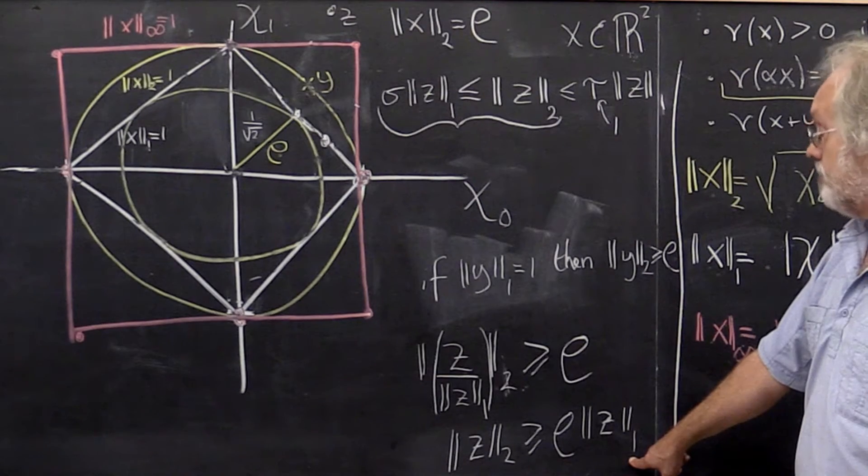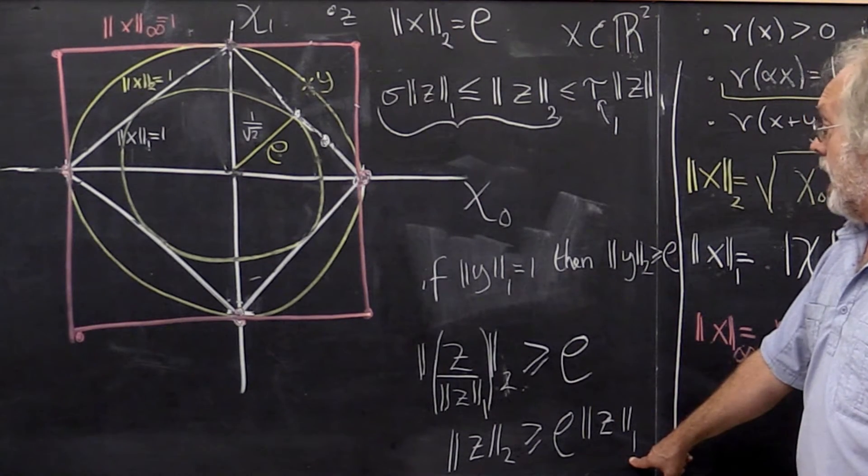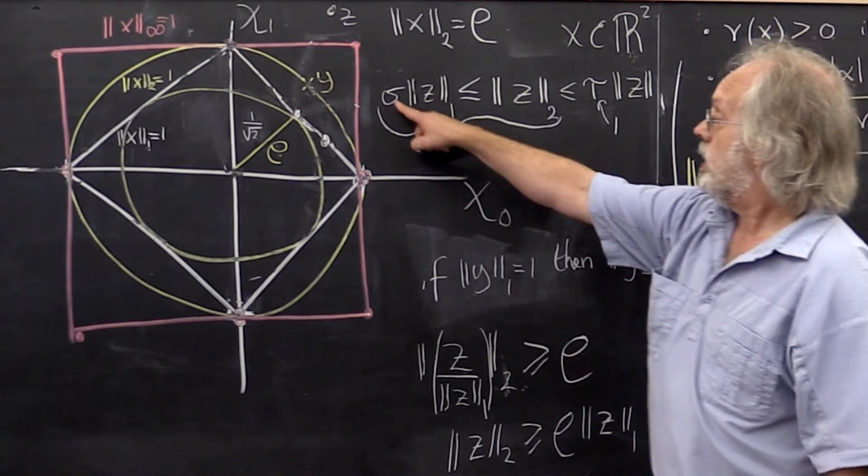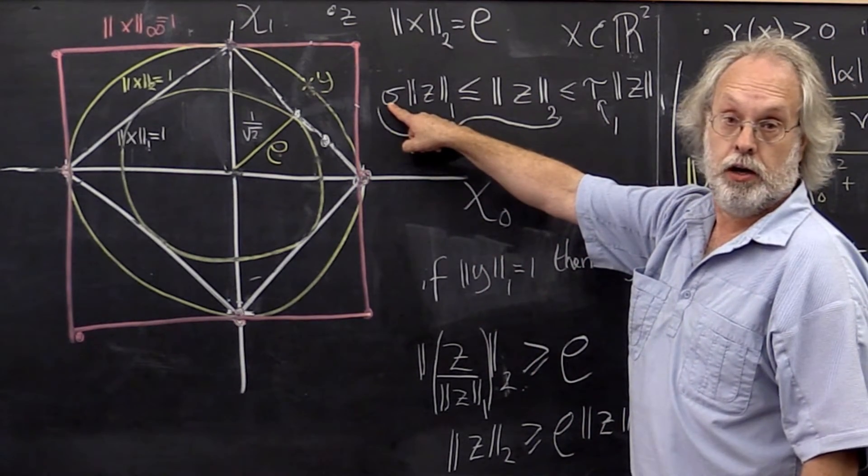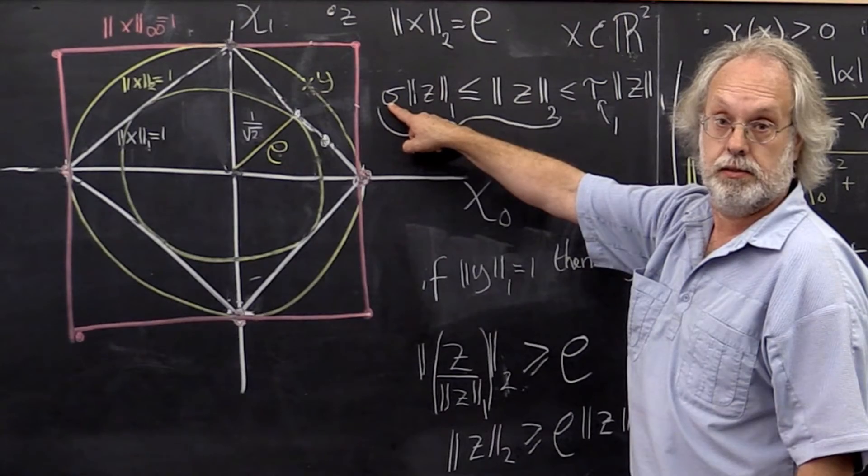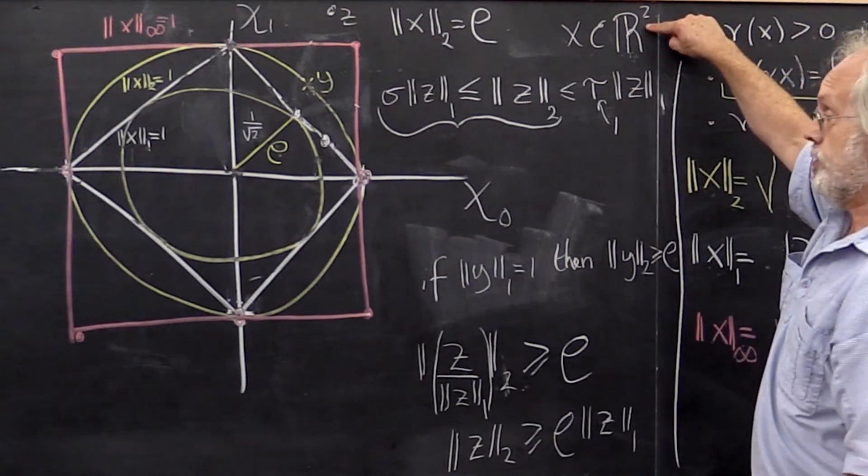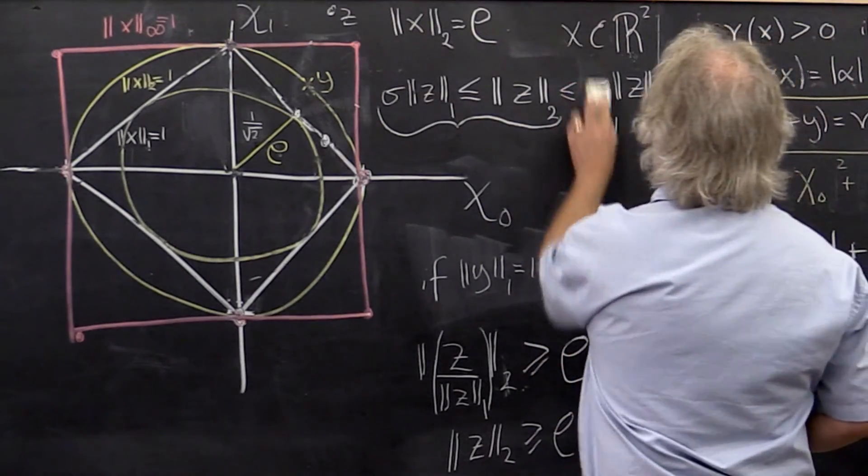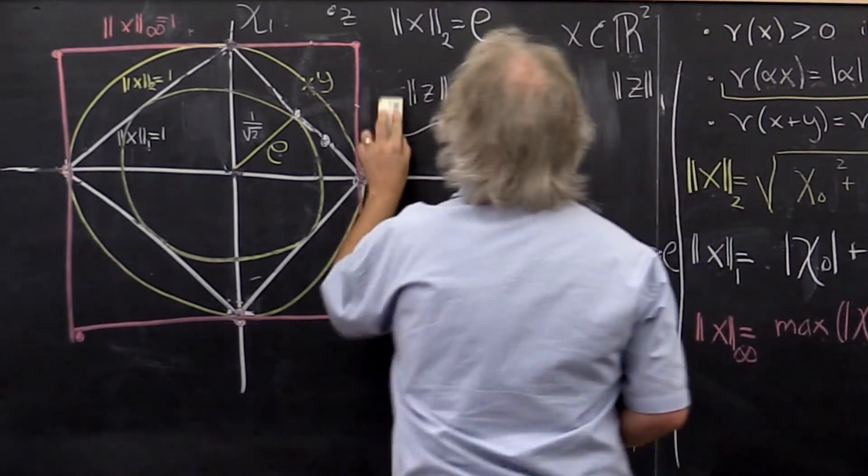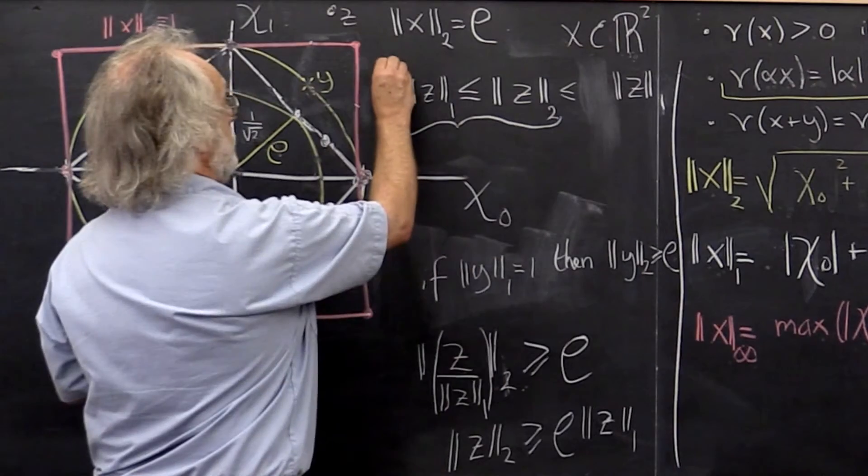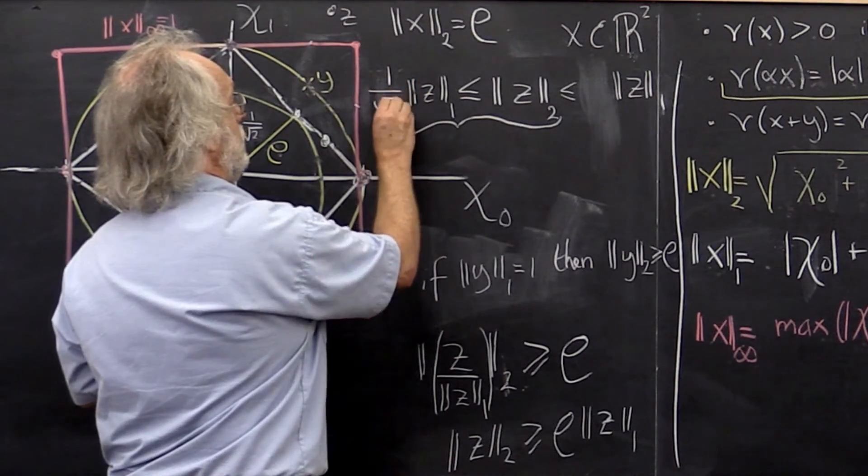Right? And bingo! We've found our constant sigma. So for vectors in two-space, we conclude that this right here is true.